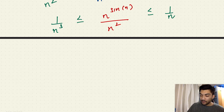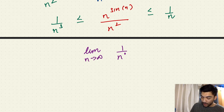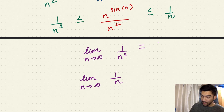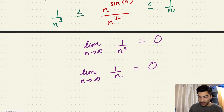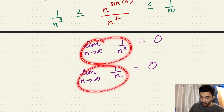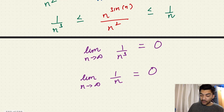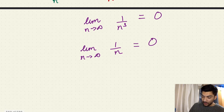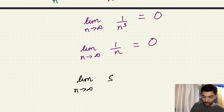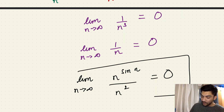Now, to apply the squeeze theorem, we calculate the limit as n tends to infinity of one over n cubed, and also the limit as n tends to infinity of one over n. Both of these are equal to zero. Since both limits of these two bounding sequences equal zero, we can conclude based on the squeeze theorem — also called the sandwich theorem, they are the same thing — that the limit as n tends to infinity of n to the power sine n over n squared is also equal to zero.